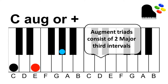Augmented triads consist of two major third intervals. Between C and E is a major third, and between E and G sharp is a major third. Another way to look at that is to ask yourself: what is the third of a C major chord? It's E. And what is the third of an E major chord? It's G sharp. So that's another way to think about major thirds.